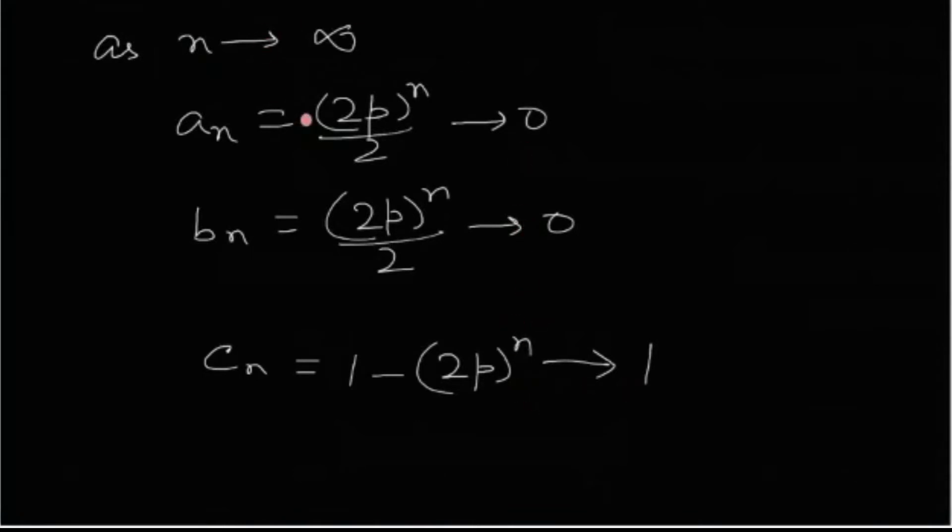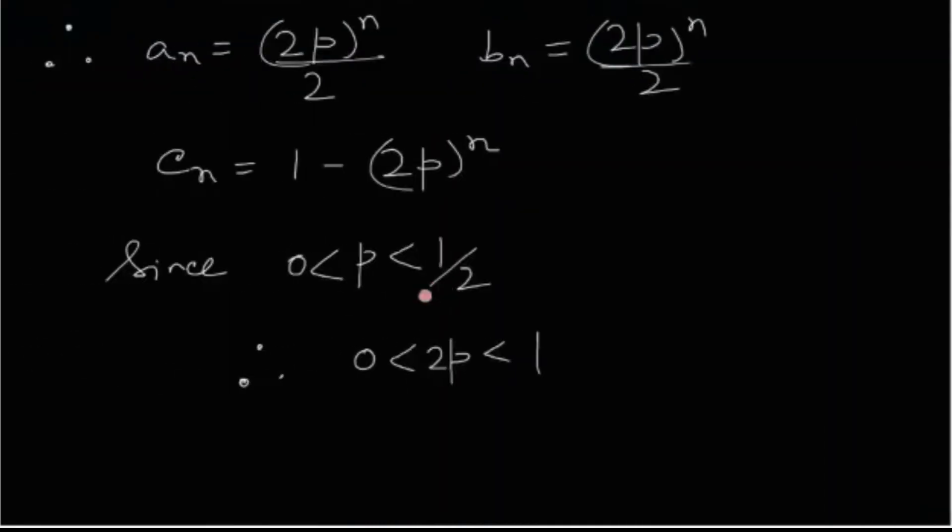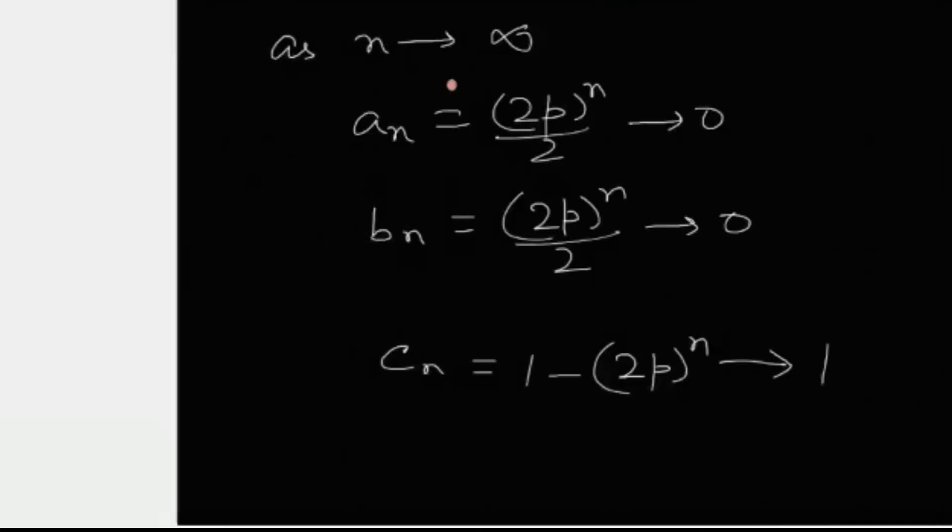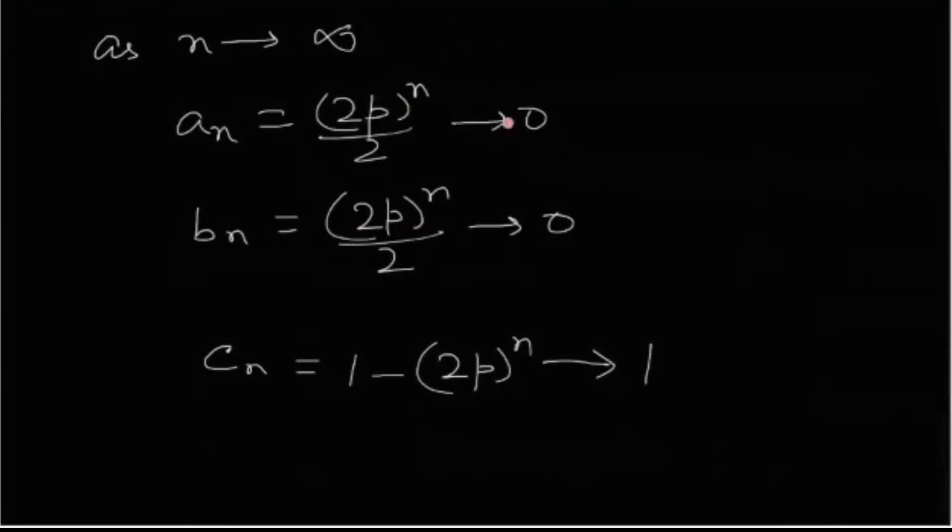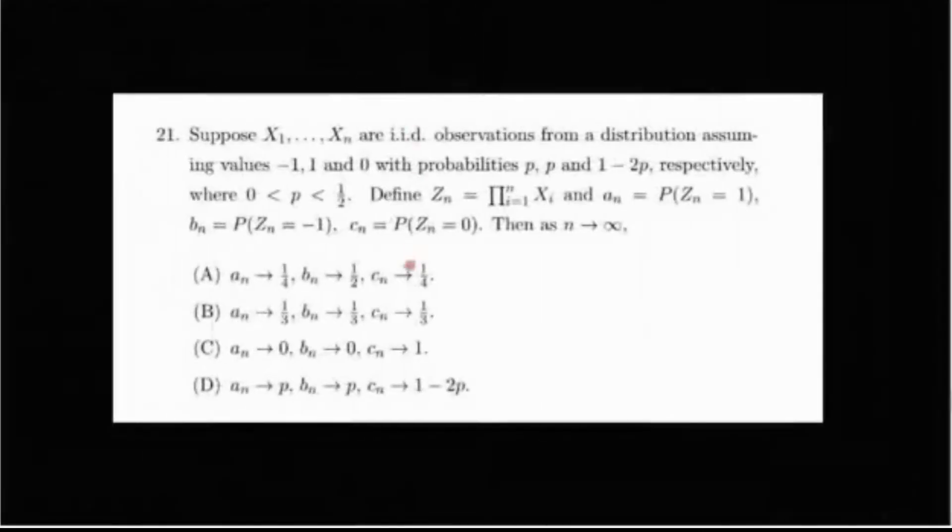This is the idea. This is the only idea. Because 2p lies between 0 and 1 and when we take the limit, when we take whole to the power n, it becomes 0. So we have the following answer. This answer. This one.